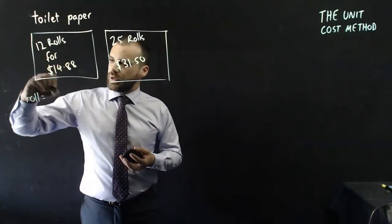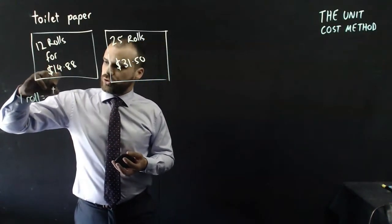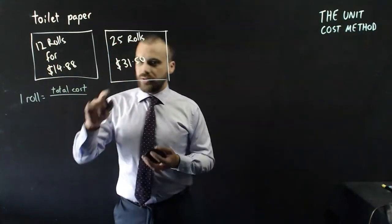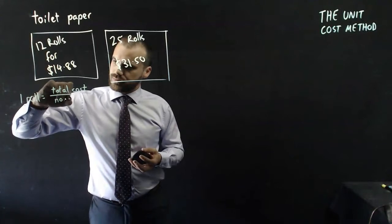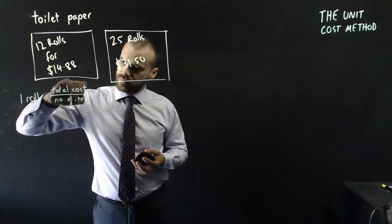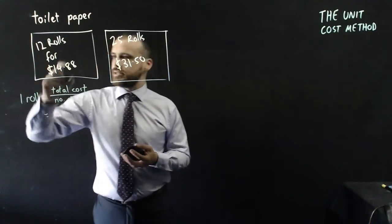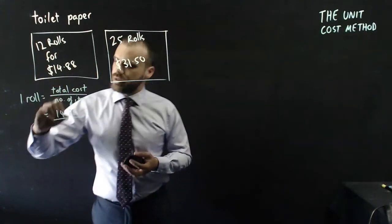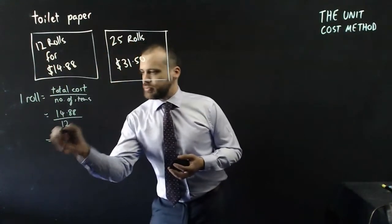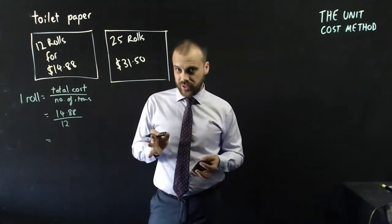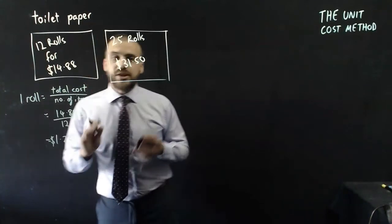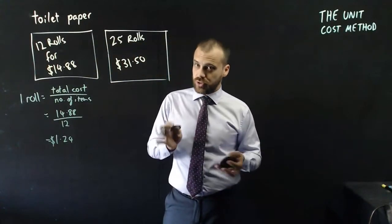One roll or one unit of the item is equal to the total cost over the number of items. In this case, $14.88 divided by 12 because that's the number of items. If you type that into your calculator, you're going to get $1.24. Each roll of toilet paper is worth $1.24.